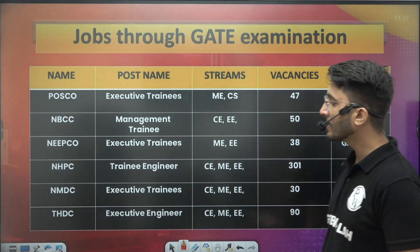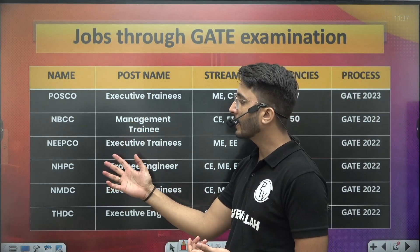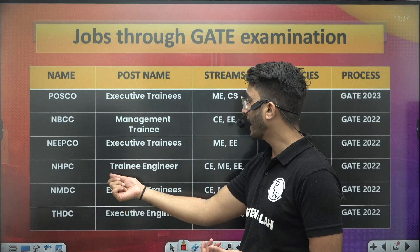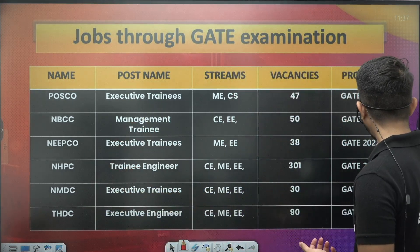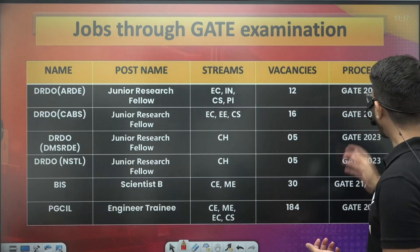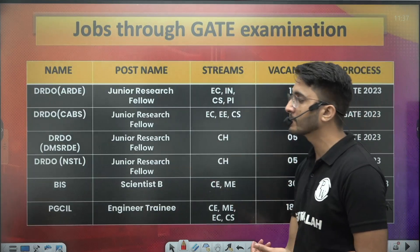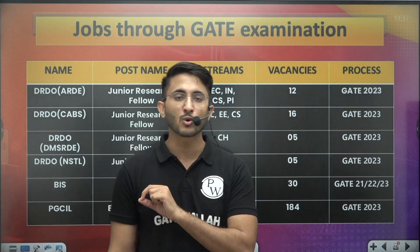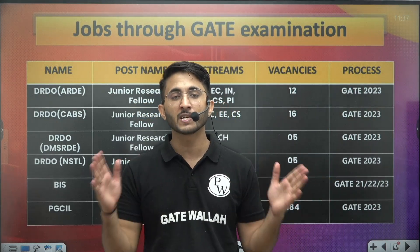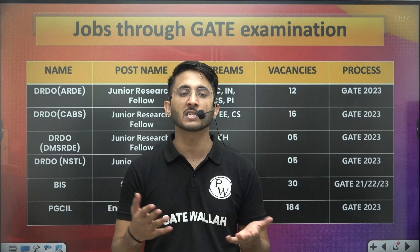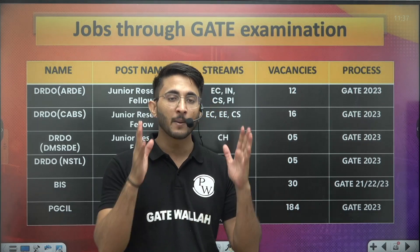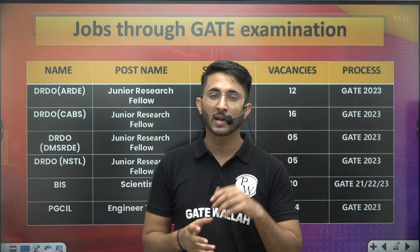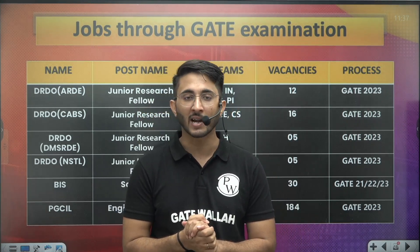Similarly, you can check POSCO, NBCC, NIPCO, NHPC, NMDC, and THDC — these are also released through GATE 2025 and GATE 2023, and all vacancies are added here. Through this PDF, you can get a lot of ideas about which PSUs have vacancies for your branch and the total number of vacancies for each PSU over the last three-year trend.